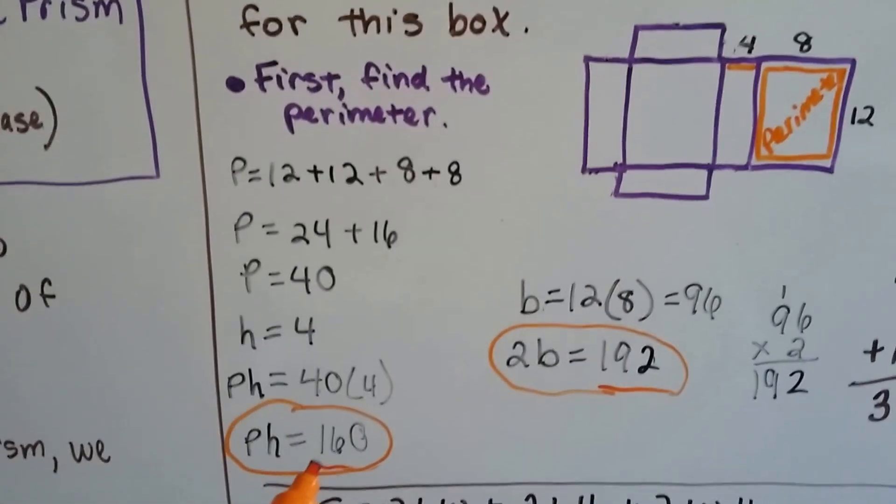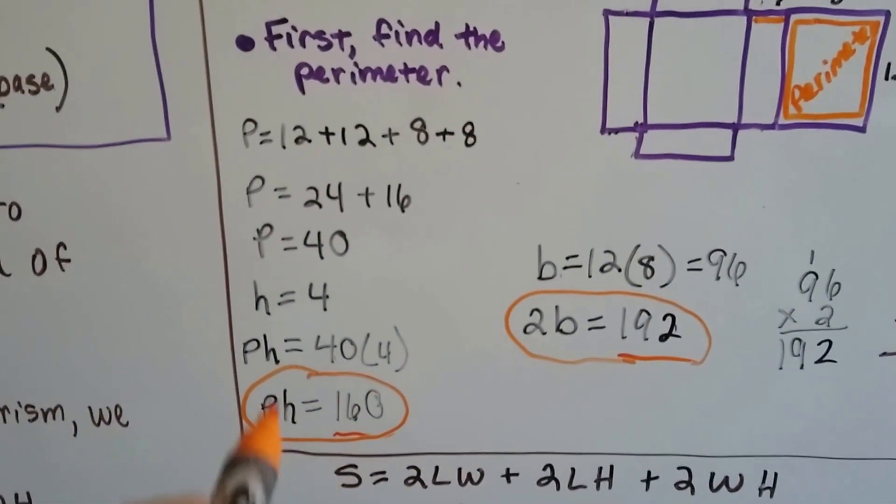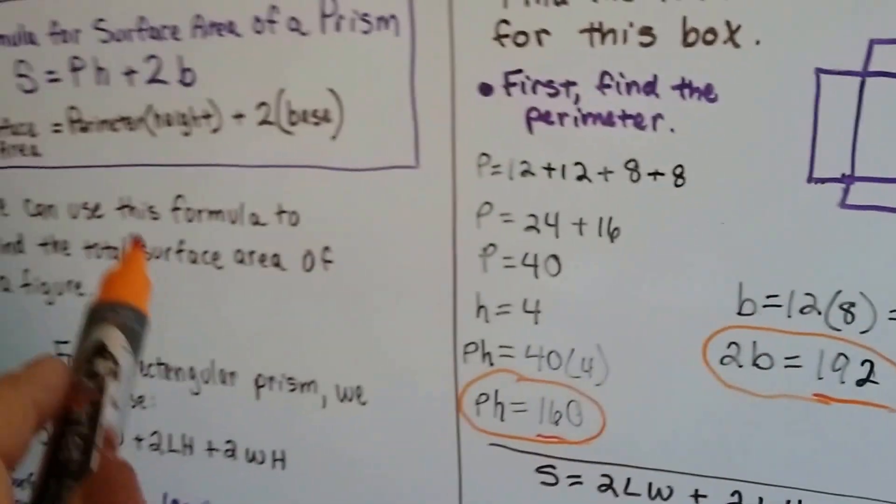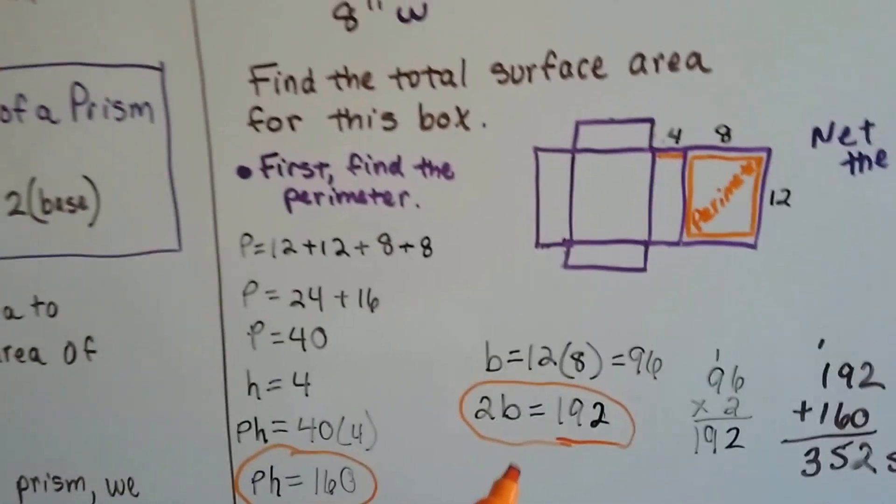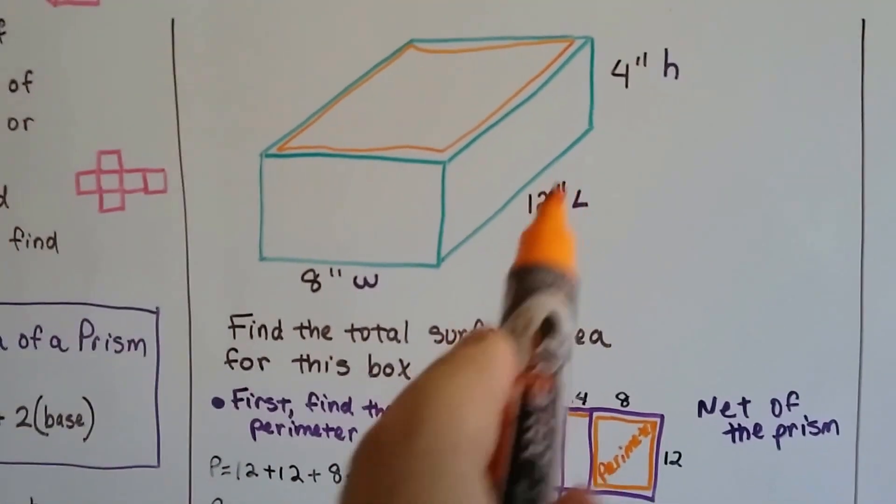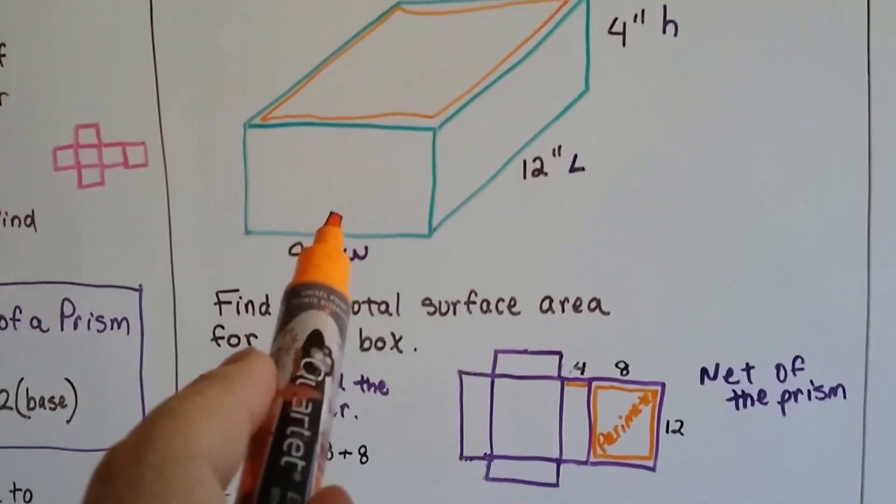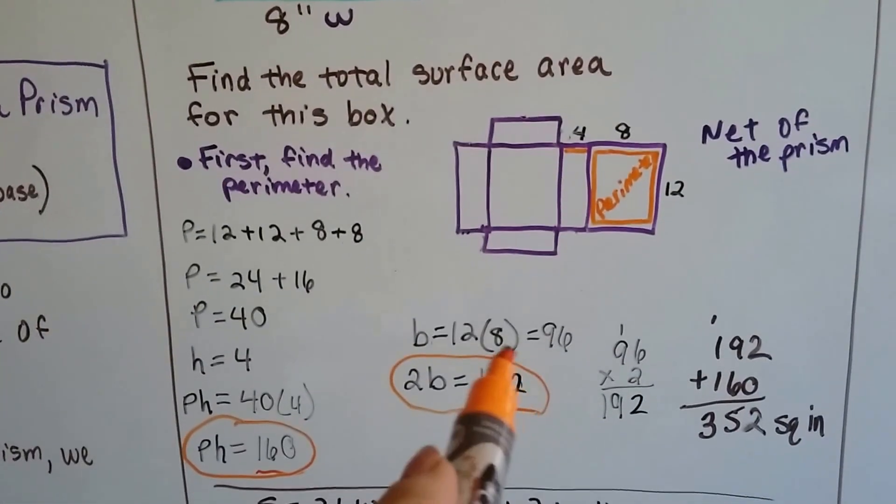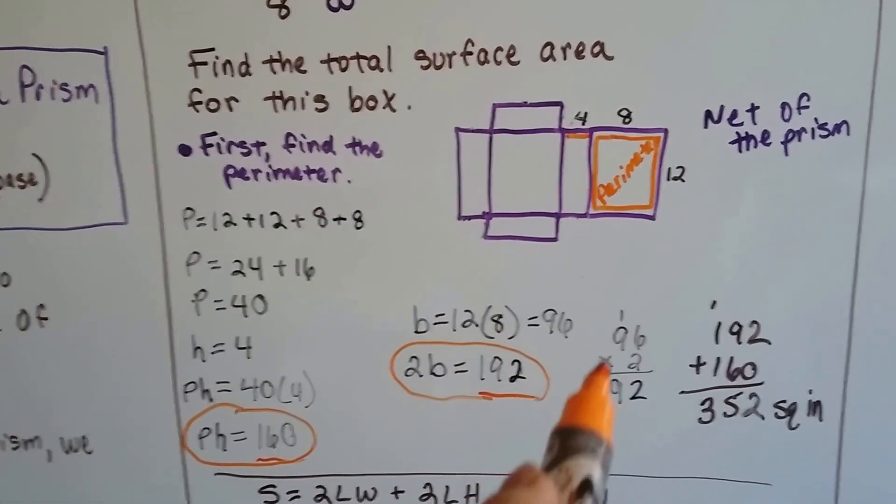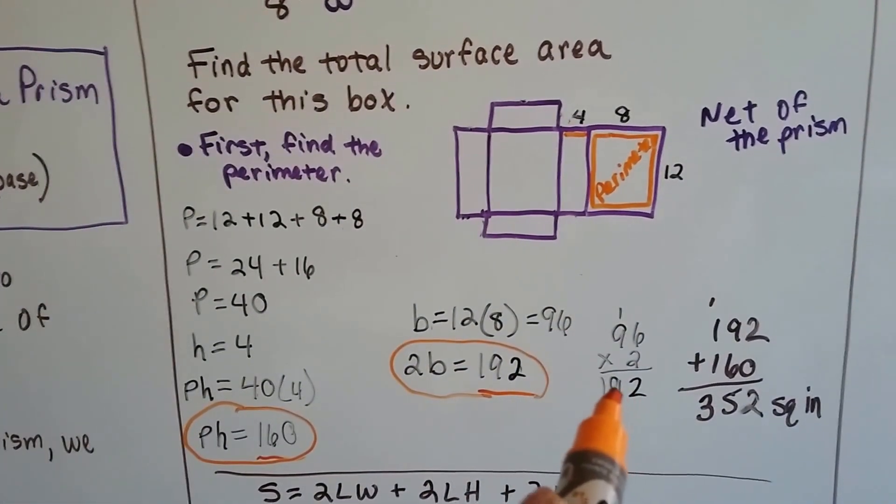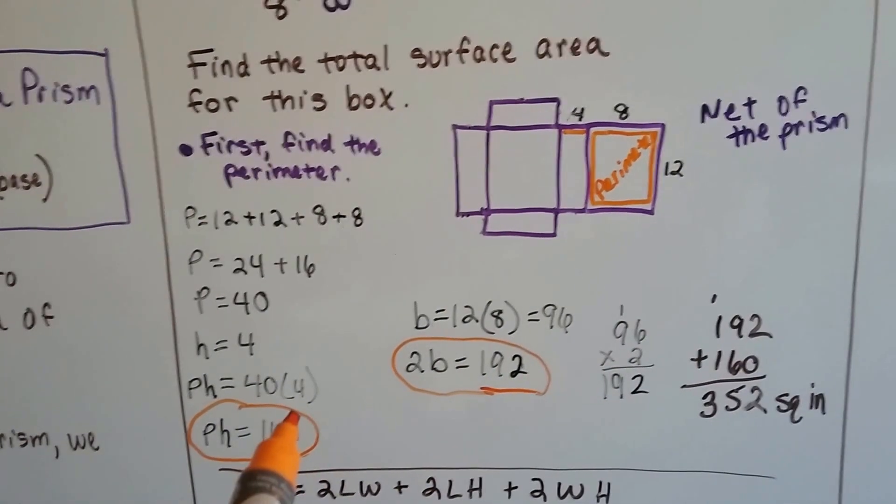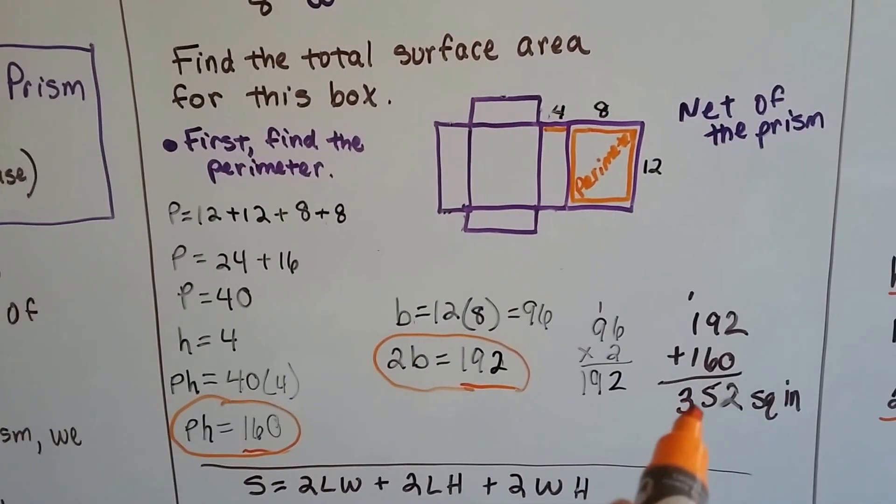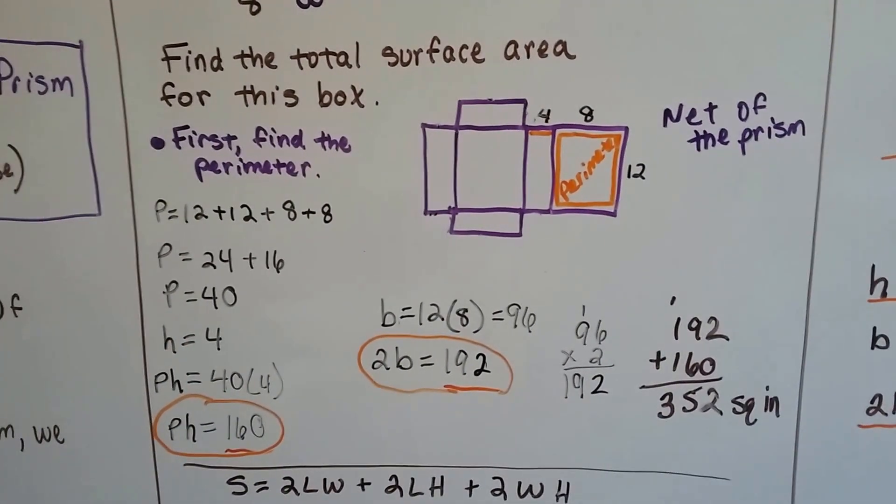40 times 4 is 160, so that's the first part of the formula, the p times the h. Now, we need to do the two bases. 8 times 12 is 96. That's 1 base multiplied by 2 is 192. We add that to the 160, and we get 352.